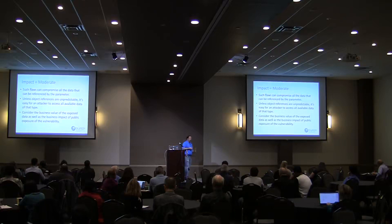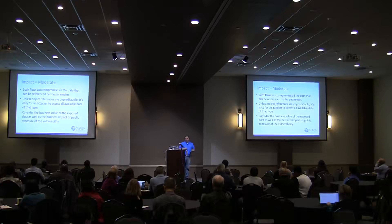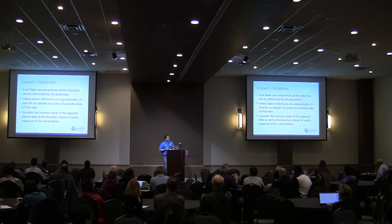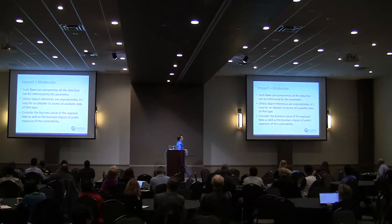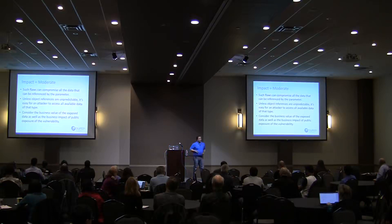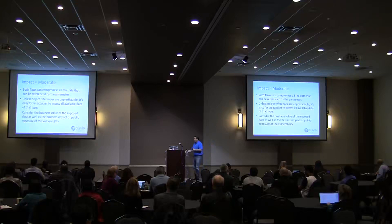If the reference is a random value like a UUID, there's no easy way to iterate through them. But if it's sequential, then we have problems. When considering the impact to our actual application, we want to look at the exposed data as well as the impact of that exposure. Is this just an internal site? Is it a publicly available site? What data is being exposed? Those are the kinds of things we need to assess.